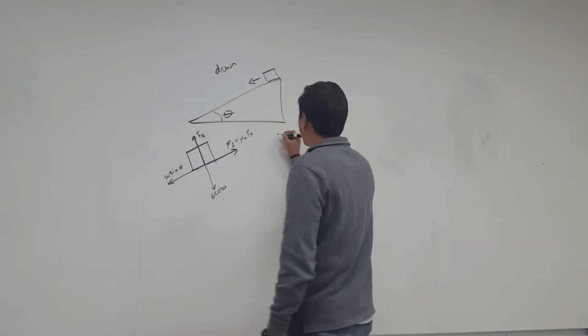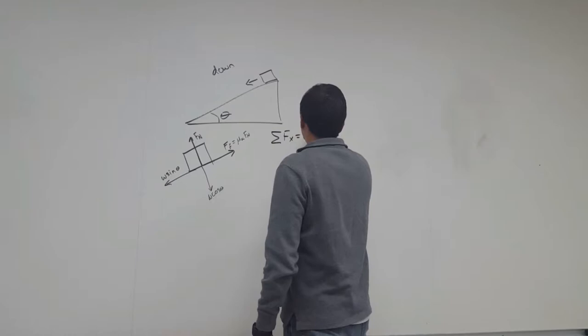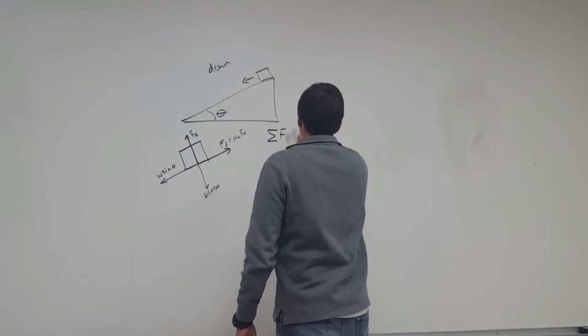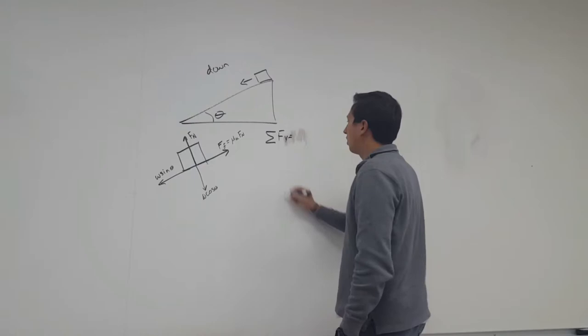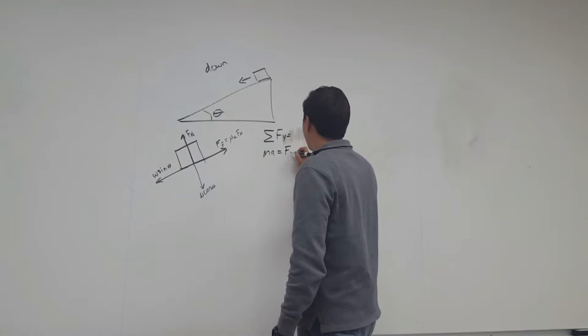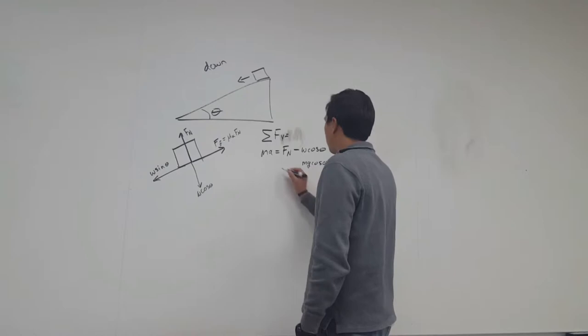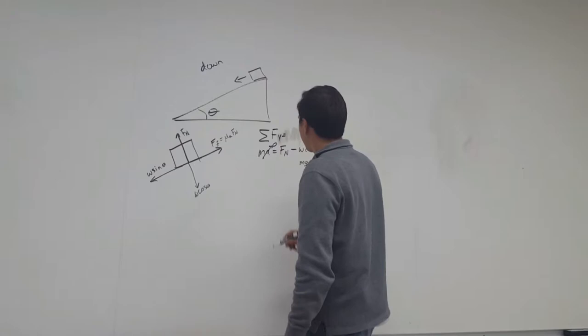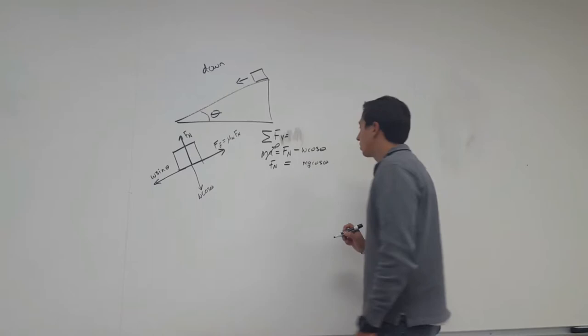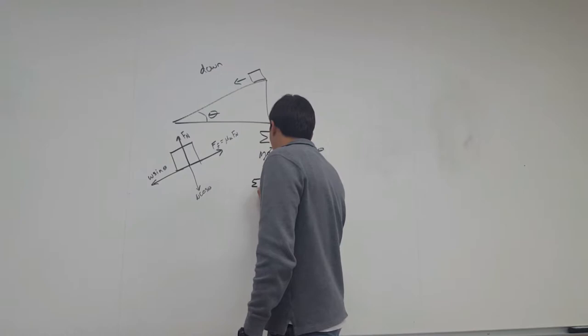So now we're going to find our summation of forces in the x direction. Actually we're going to do y first. Make this a little bit easier. We're going to do summation of y. We're going to have ma on this side equals Fn minus W cosine theta. Weight is mg cosine theta. Since there's no acceleration in the y direction, this is going to cancel out to 0. So essentially we're going to have Fn equals mg cosine theta. We'll use this here in a second.